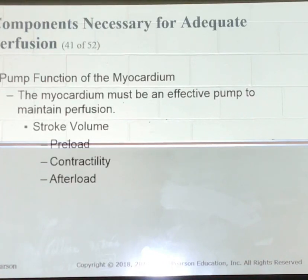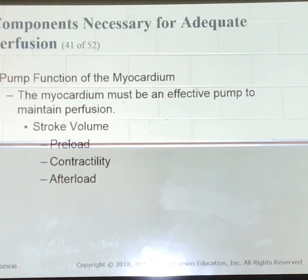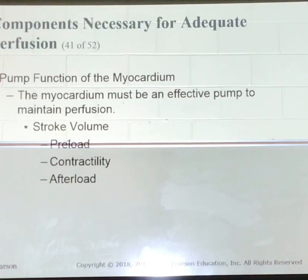Stroke volume is defined as the volume of blood ejected by the left ventricle with each contraction. Stroke volume is determined by the preload, myocardial contraction, and afterload. Preload is the pressure that is created by the blood volume in the left ventricle at the end of diastole. The available venous volume plays a major role in determining preload. An increase in preload increases stroke volume, which increases the cardiac output.